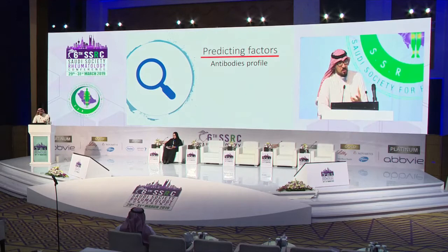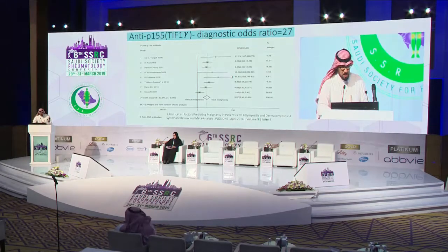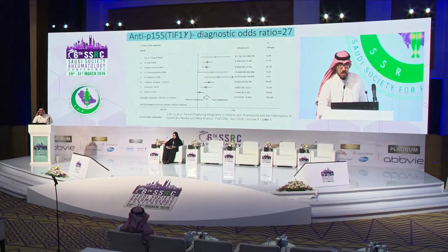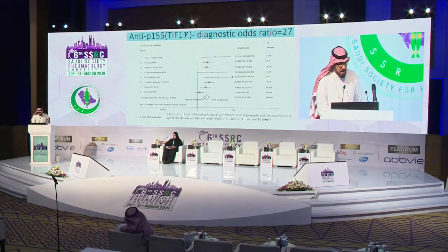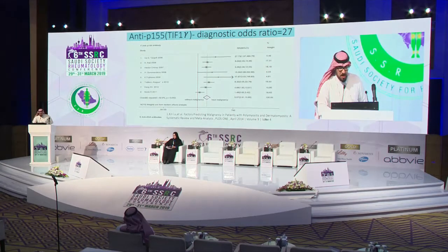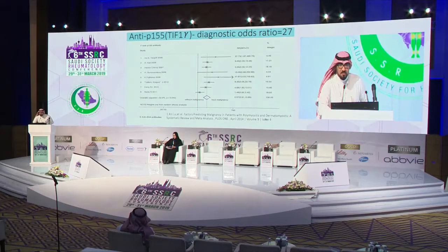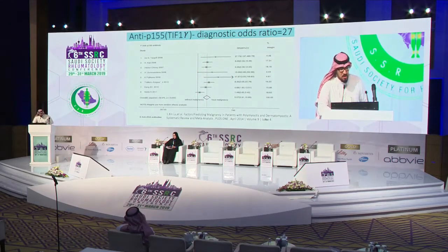Moving to antibody profile, which is more important because it has the potential to guide our screening. Starting with anti-TIF1-gamma (NXP-155 / TIF1-γ): from a pooled analysis including eight studies, most showed a significant association between anti-TIF1-gamma and malignancy, with a diagnostic odds ratio reaching 27, meaning a patient with positive anti-TIF1-gamma carries 27 times higher risk of developing malignancy compared to a negative result.